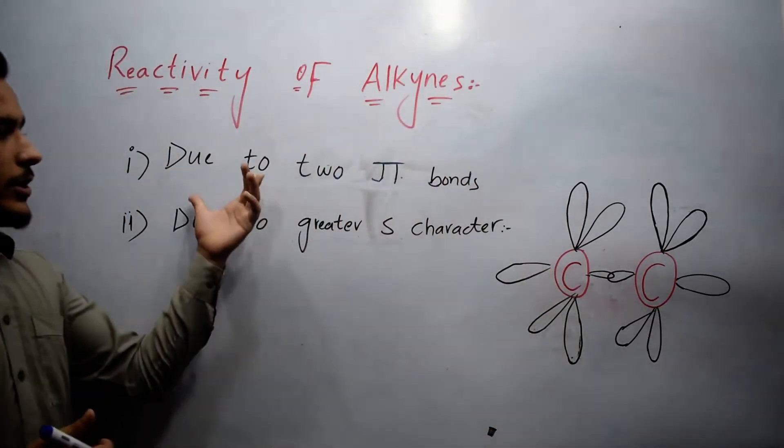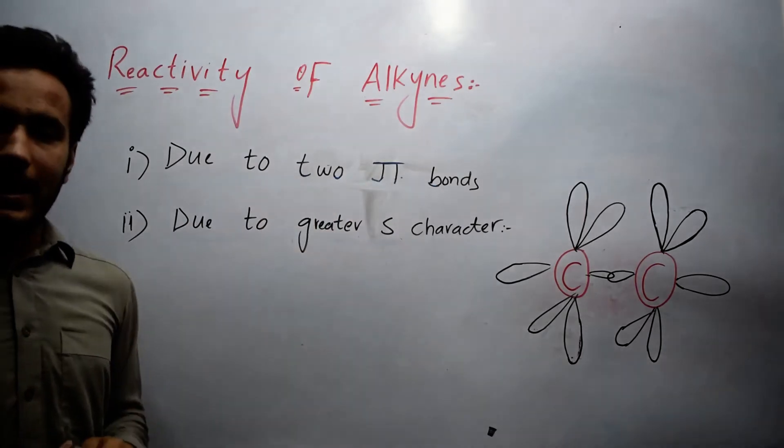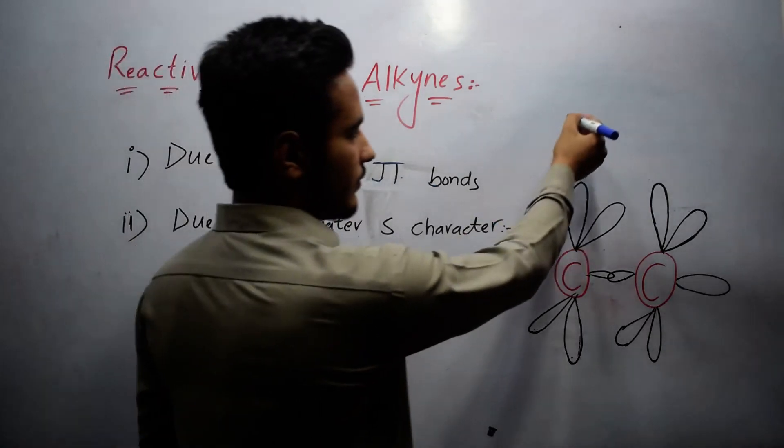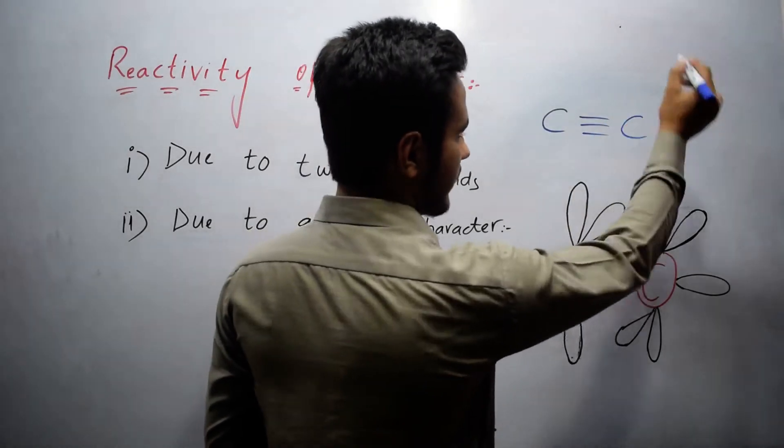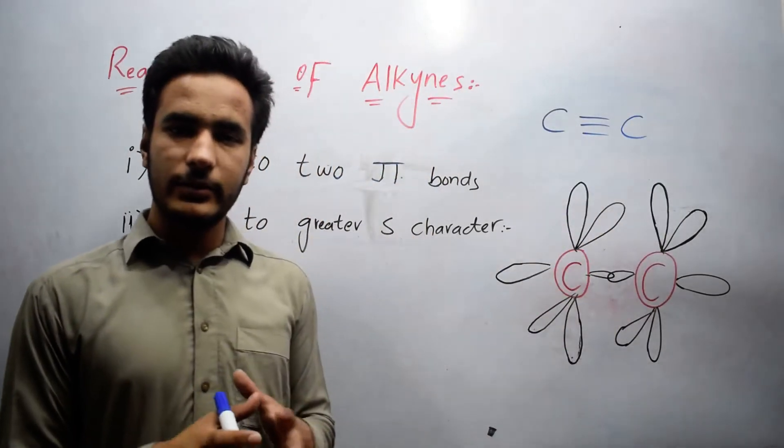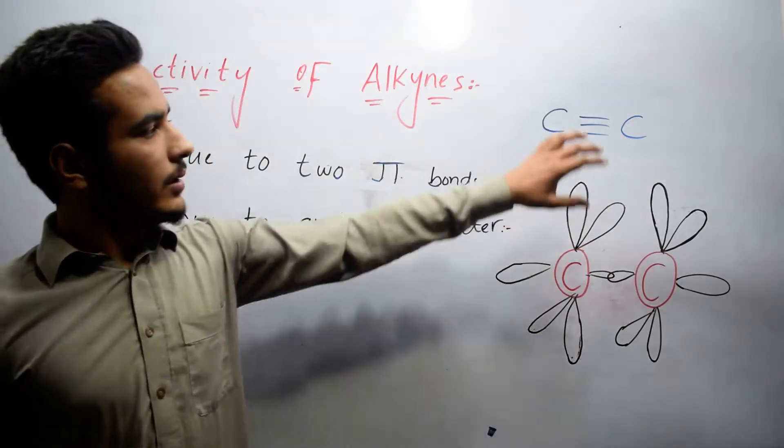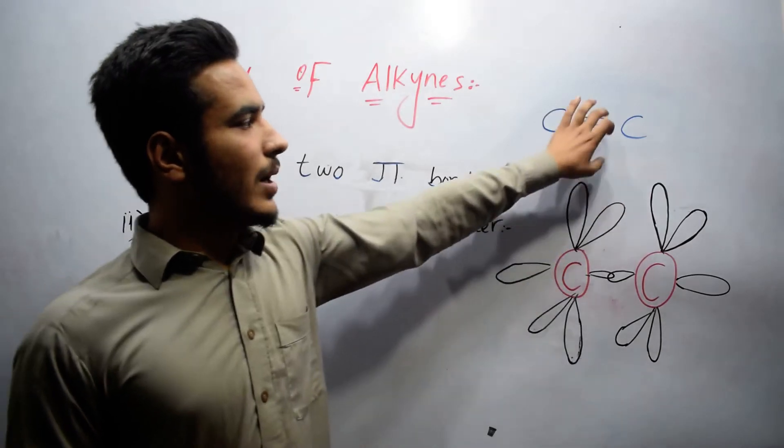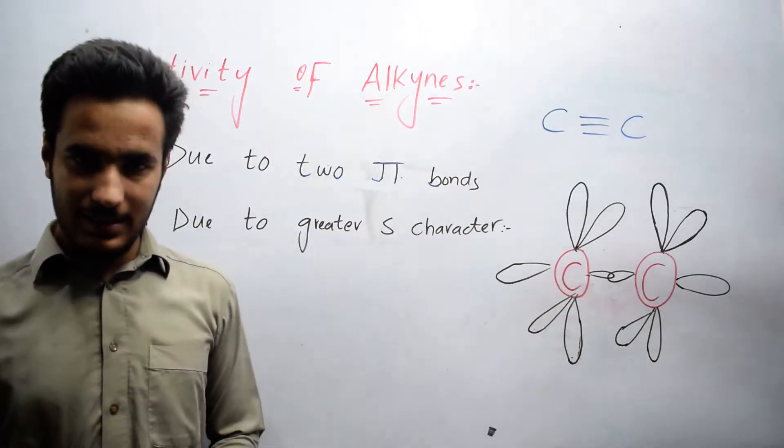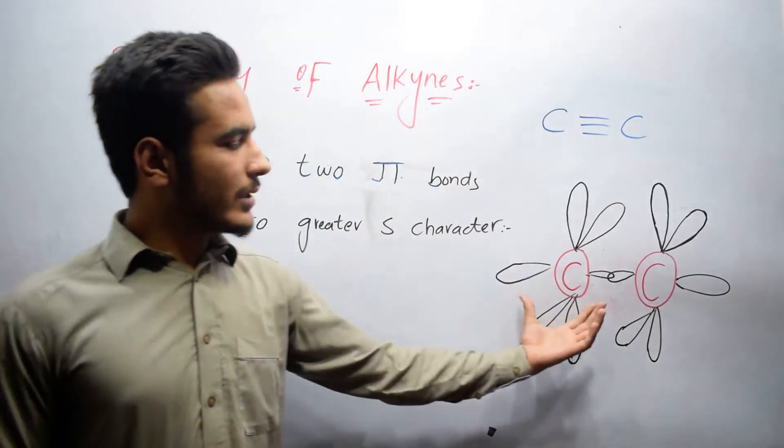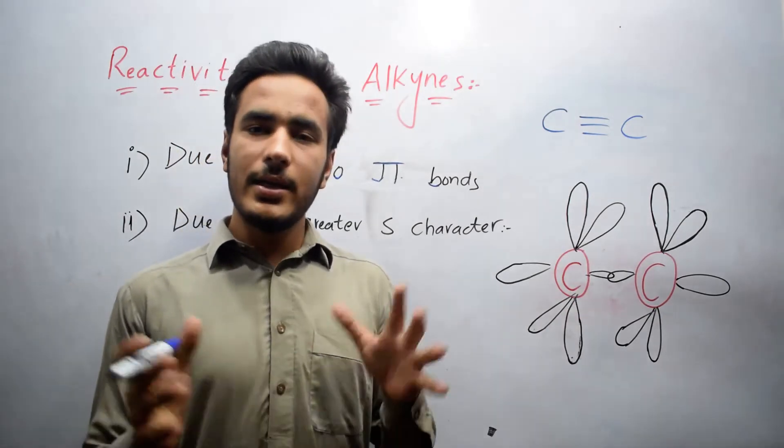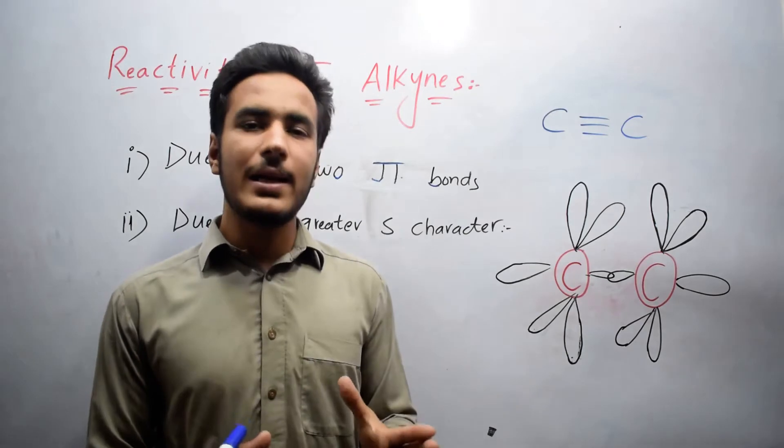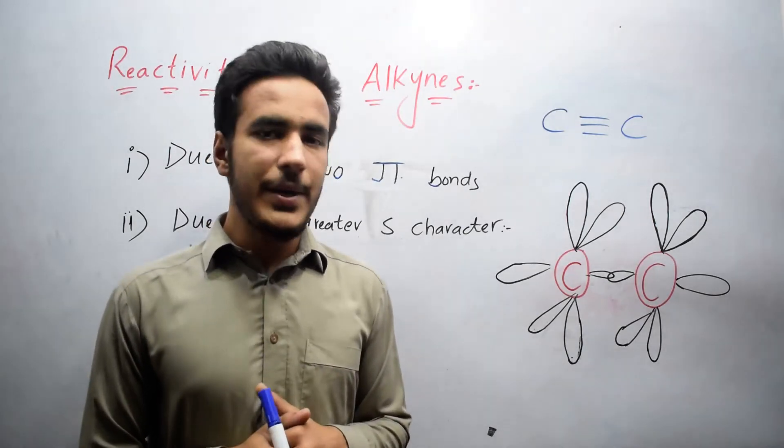The first reason is due to two pi bonds in alkynes. We know that carbon in alkynes contain triple bond. One bond between carbon and carbon is sigma bond and the two bonds are pi bonds. If we look at this structure, we know that linear overlapping is known as sigma bond while sidewise overlapping is known as pi bond.